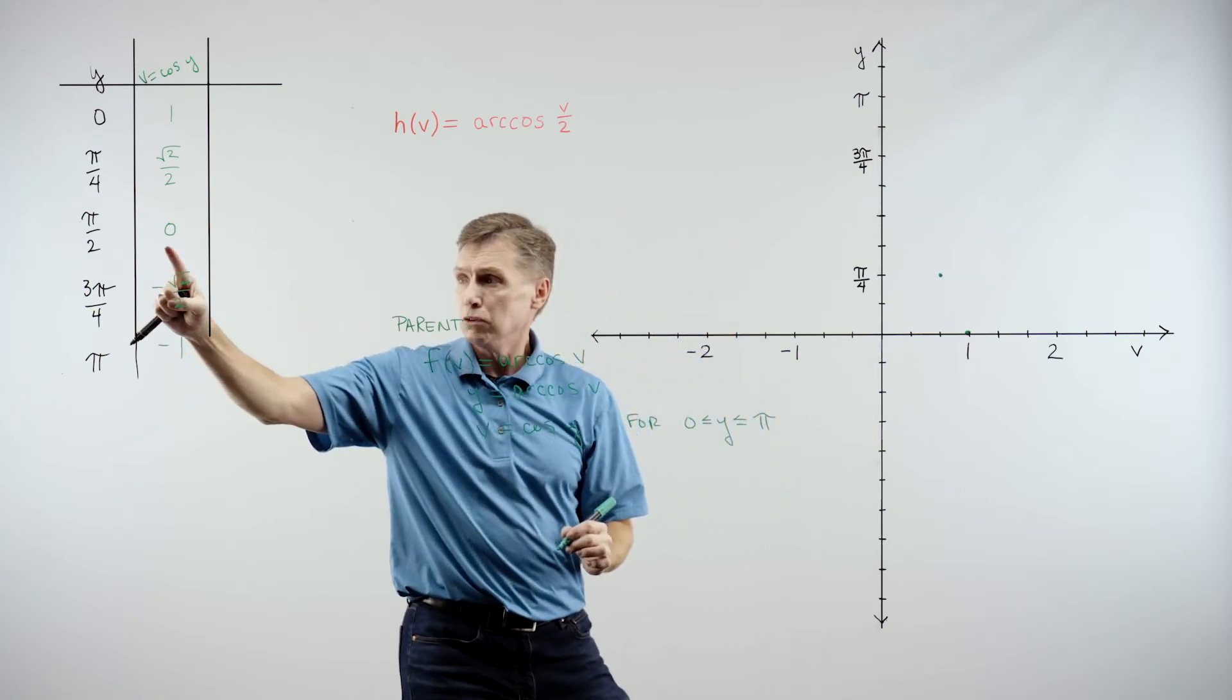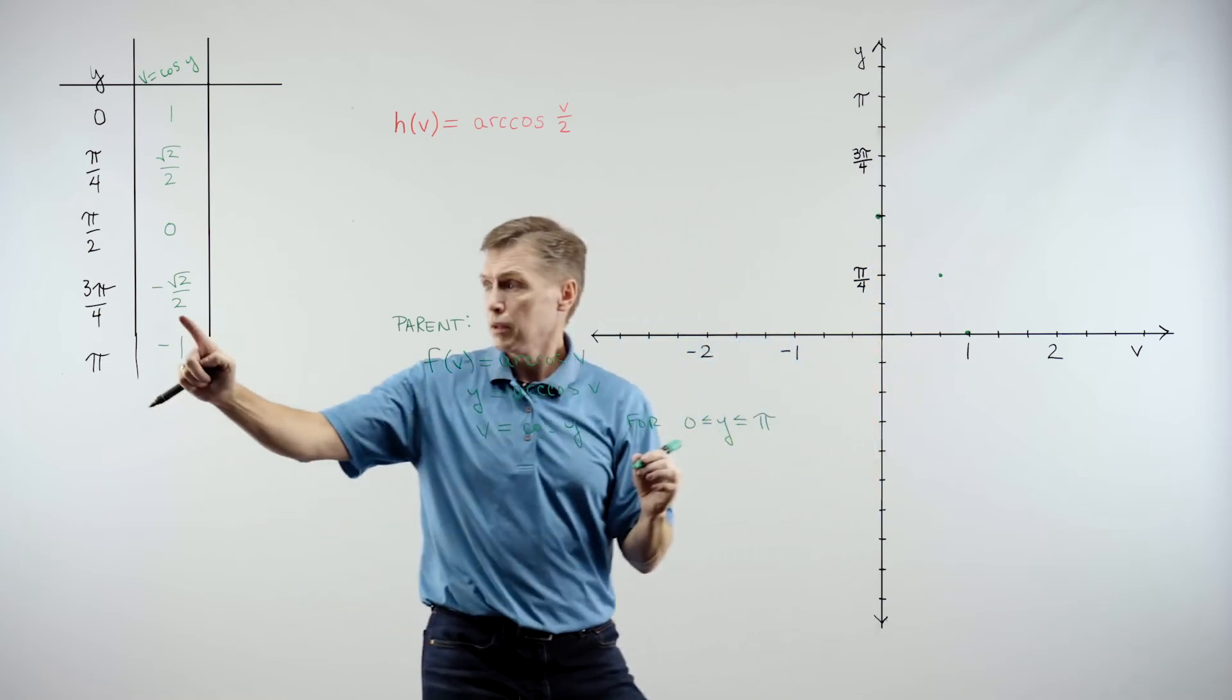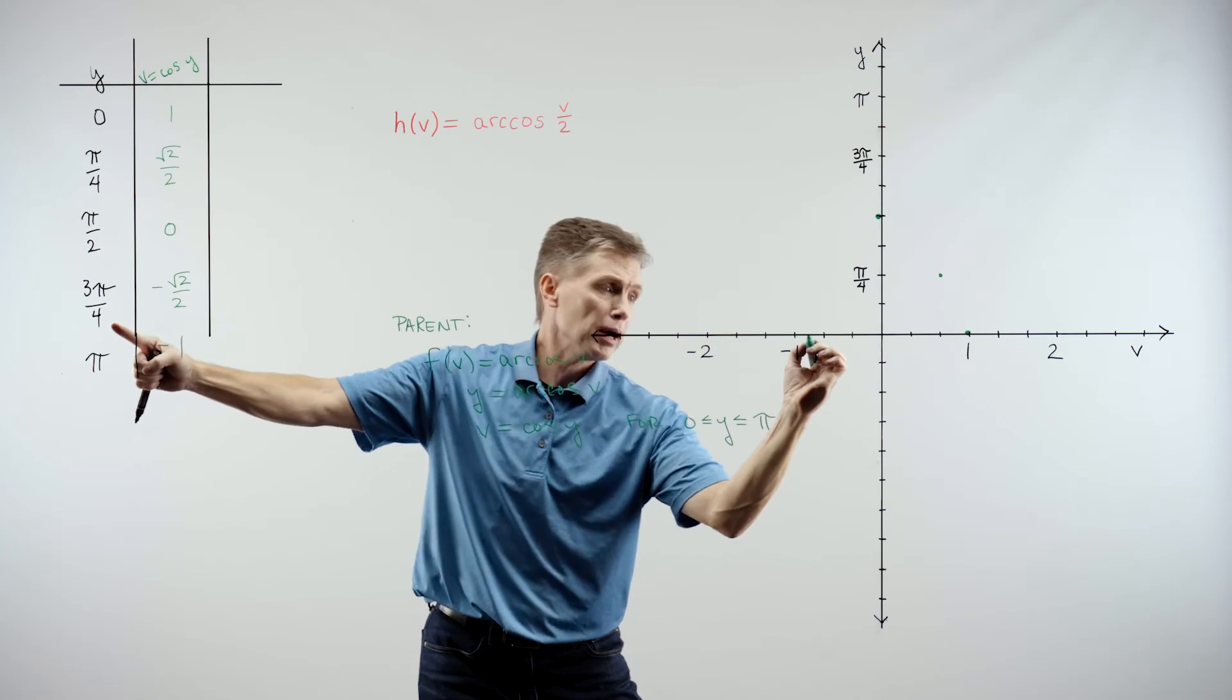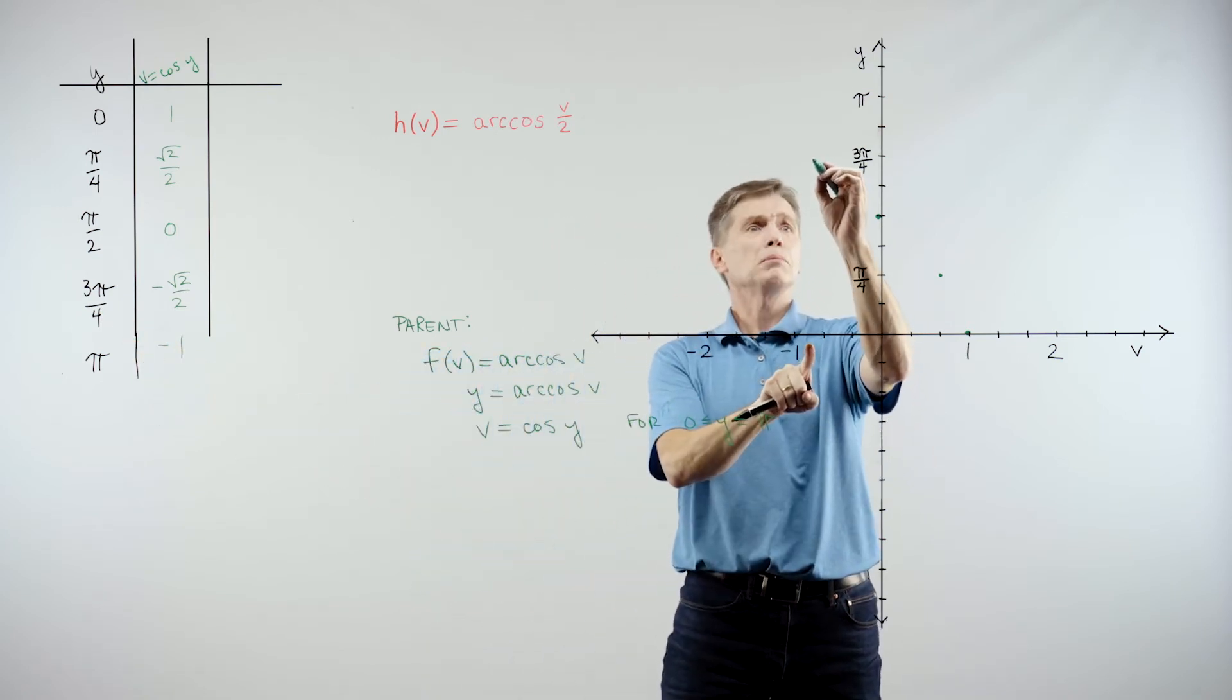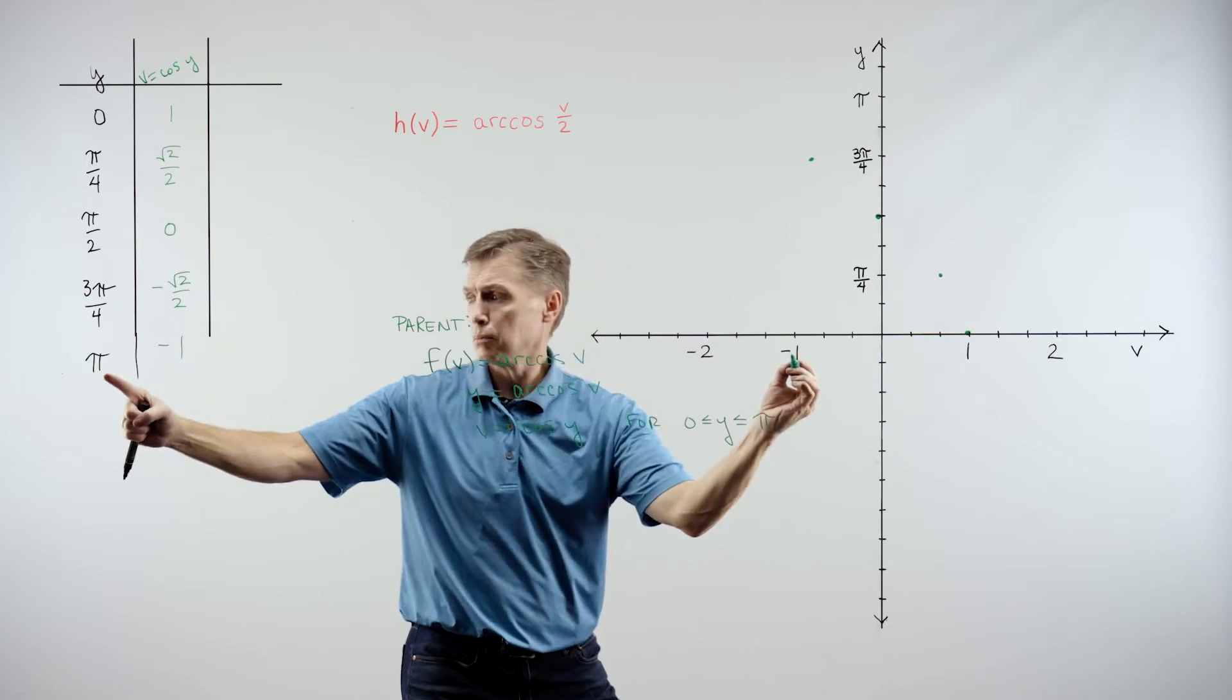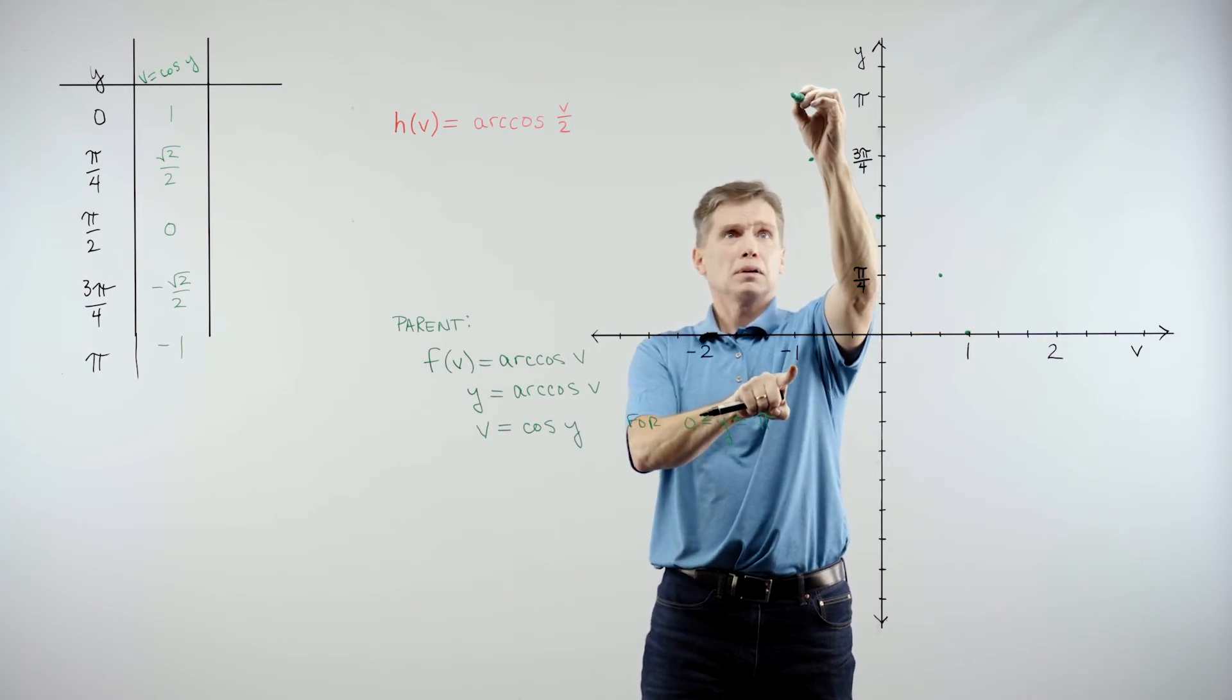Okay. Then next point. 0, pi over 2. 0, pi over 2. And then negative square root of 2 over 2. Right around there. And up to 3 pi over 4. Up to 3 pi over 4 right about there. Finally, negative 1 on the horizontal axis. Pi up the vertical, which is right about there.